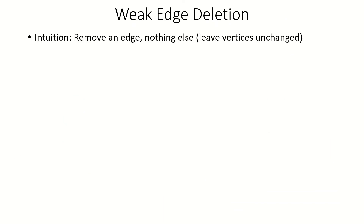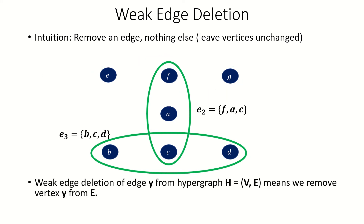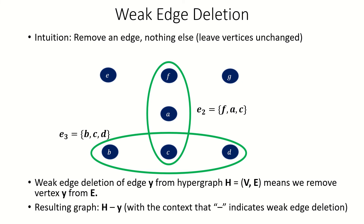Let's move on to weak deletion of edges. Weak deletion of edges means we remove an edge from the hypergraph, leaving all other objects unchanged. Here is an example of weak deleting edge e sub 1. More formally, weak deleting an edge y from a hypergraph means removing y from the edge set of that hypergraph. This produces a new hypergraph H minus y, with the same vertex set but without edge y.